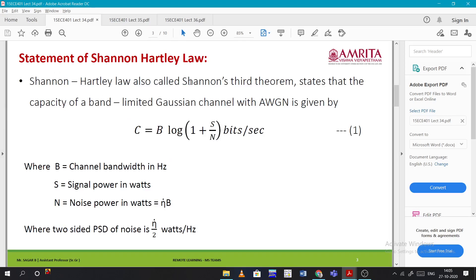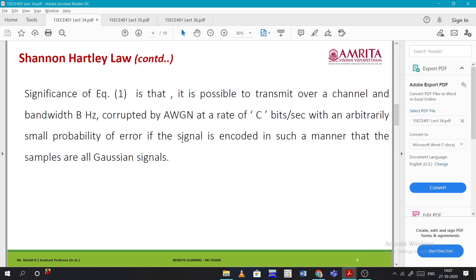The Shannon-Hartley law states that the capacity of band-limited Gaussian channel with AWGN is given by this formula: C = B log(1 + S/N) bits/sec. Here C is the channel capacity, B is the channel bandwidth in Hertz, and S/N is the signal-to-noise ratio. S is the signal power in watts and N is the noise power in watts. This N can be rewritten as η·B, where η is the power spectral density of noise.